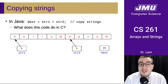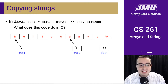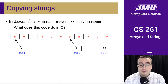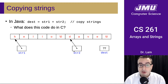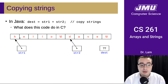It doesn't do what you probably think it does. In Java, this would create a new string called dest for destination, and it would copy str1 and str2 into that new location. But that's not what's happening here because str1 is just a pointer to the first string, and str2 is a pointer to the second string. I've drawn them consecutively here, so str2 is right after str1 in memory, but that's not necessarily the case.